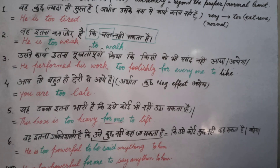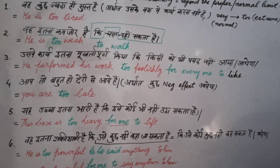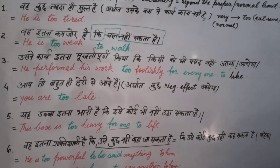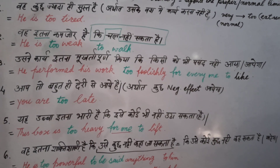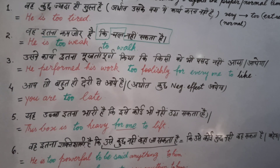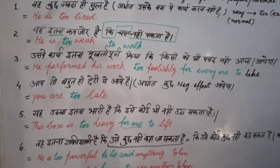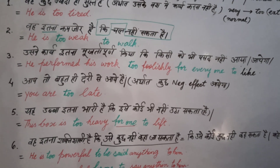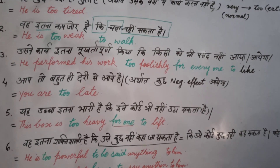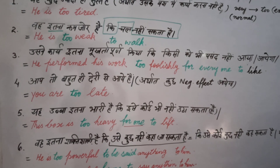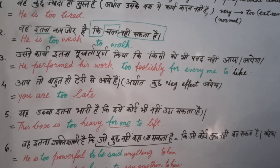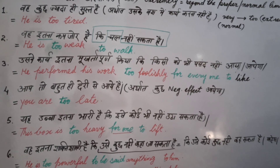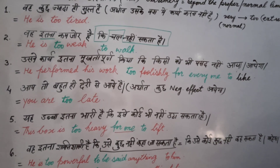Let's begin with sentence number four: 'Aap toh bohat deri se aay hai.' Sometimes in a sentence, we speak only half and the rest of the meaning is hidden. The actual meaning implies something negative is going to happen — 'You are too late' means you have missed something. A negative result is expected. This sentence is actually similar to sentence number one, written again to show the difference in wording.